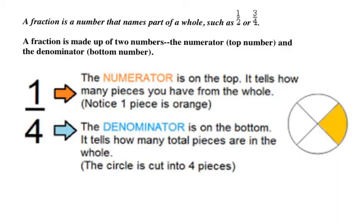The numerator is going to tell you how many pieces you have of the whole. So 1 means that you would have 1 part shaded. And then the denominator is on the bottom and tells you how many total pieces there are in the whole. So if you count them up, there's 4 pieces in the circle. So that's why there's a 4.